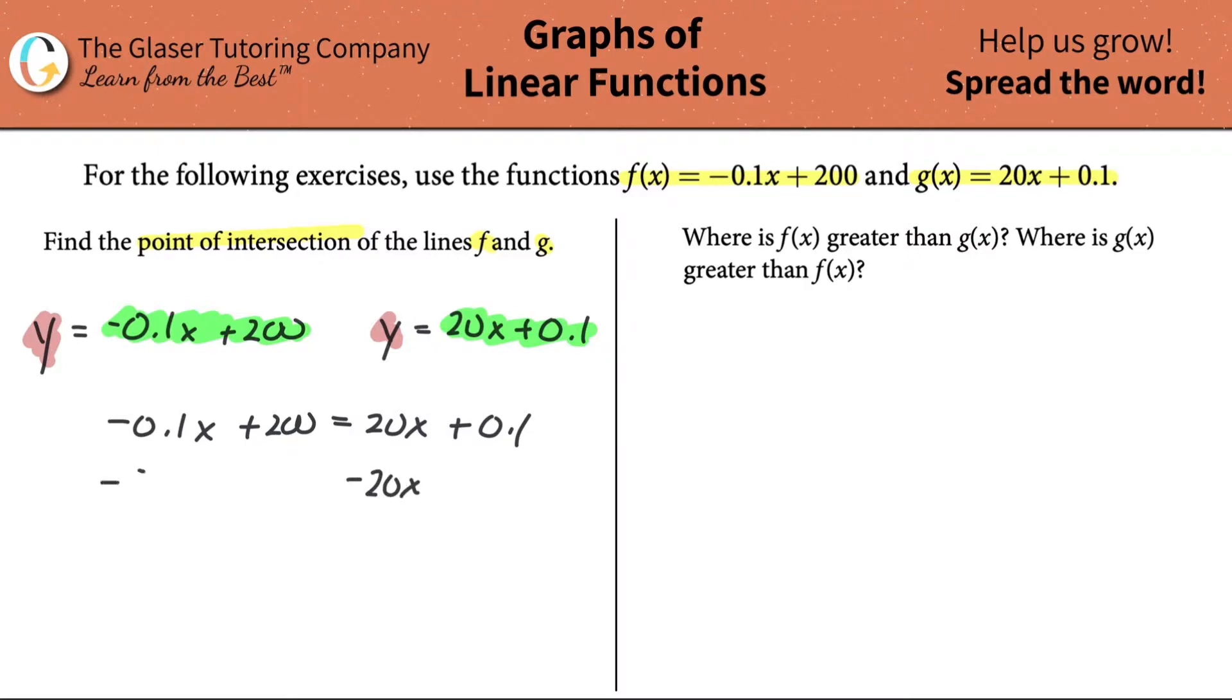Notice I have now one unknown, so I can easily solve for that. Let's bring the x over to the left hand side. That would be a negative 20.1x. And we'll bring the 200 and subtract that over to the right hand side. So that would have cancelled, that would have cancelled. So we're adding up this part, which we did already. And we're adding up this part, which is essentially a subtraction. So this would be then a negative 199.9. Now we're going to divide both sides by negative 20.1.